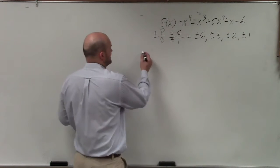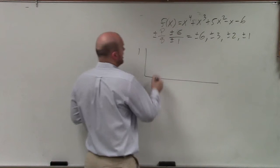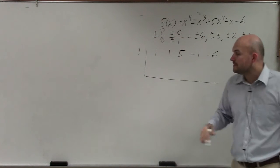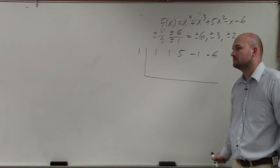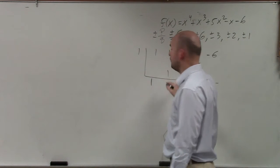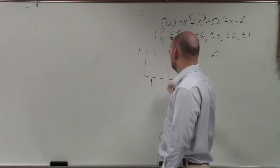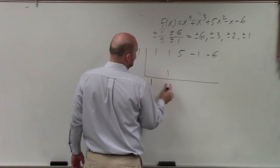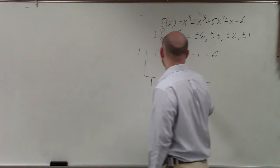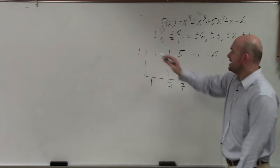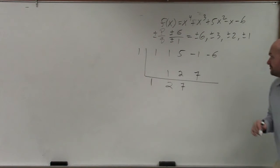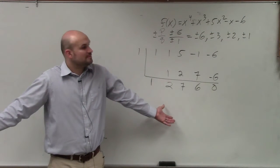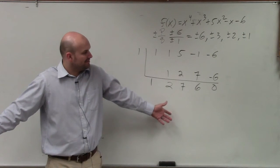I think 1 and negative 1 work, so let's try 1. I make sure I put my coefficients. Take 1, bring it down. 1 times 1 is 1, 1 plus 1 is 1. 1 times 1, 1 plus 1 is 2. 2 times 1 is 2, 5 plus 2 is 7. 7 times 1 is 7, negative 1 plus 7 is 6. 6 times 1 is negative 6 — remainder 0. It works.